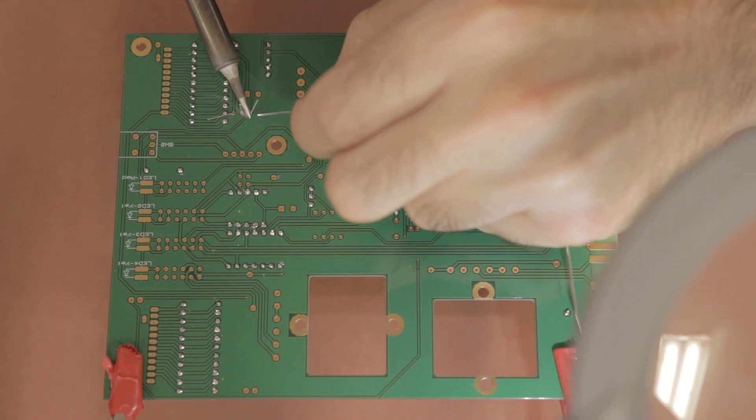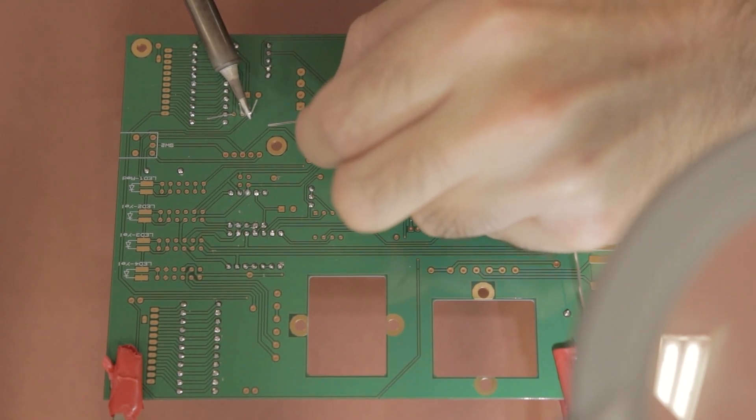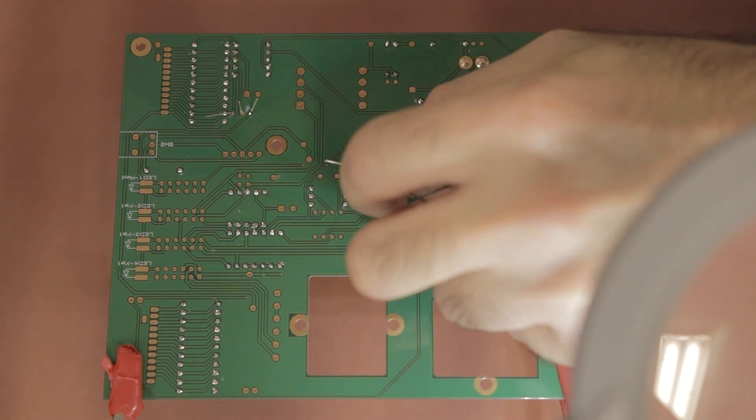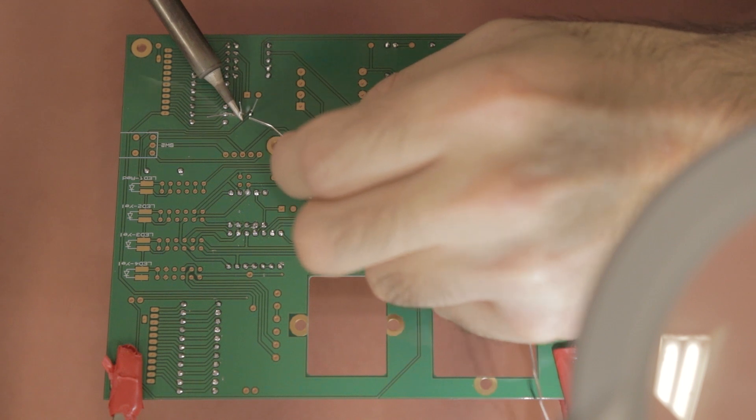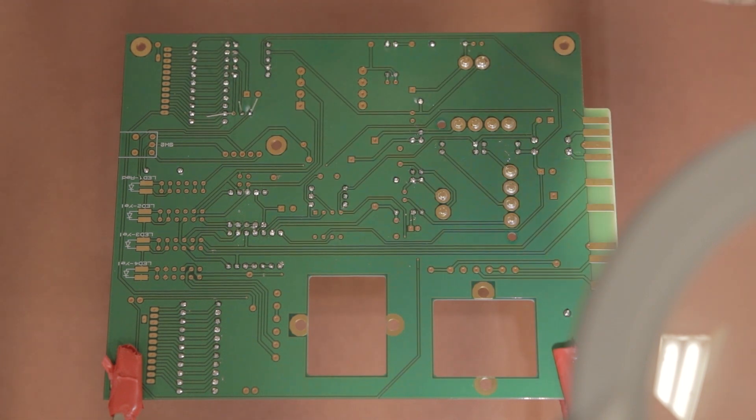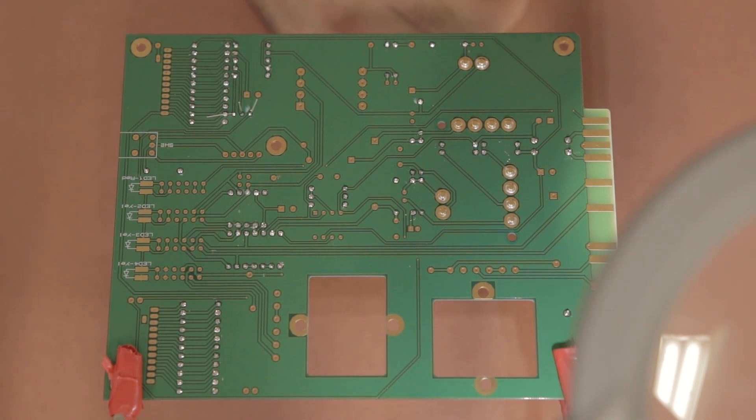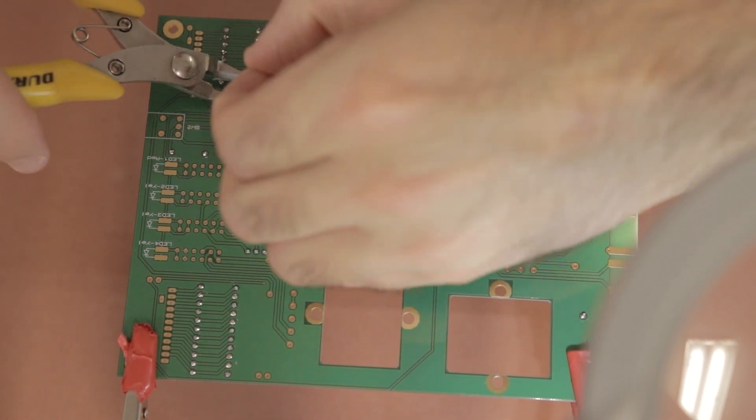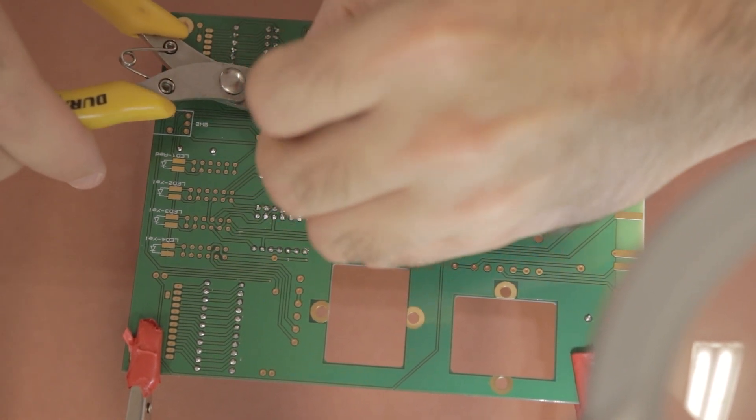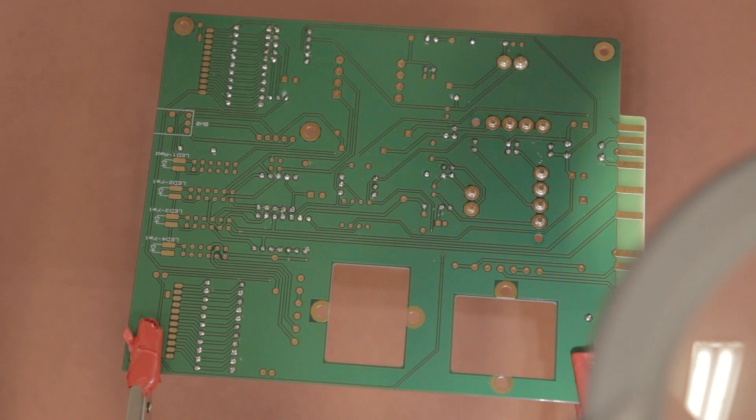Start soldering the legs of the transistor, and it pays to be careful here. You should be careful not to overheat the transistor by soldering all the legs at one time, as it can cause the transistor to get overheated. The best thing to do is solder one leg and then let it wait and let it cool, and then solder the others after that.